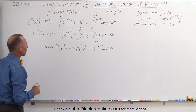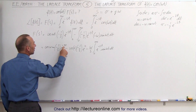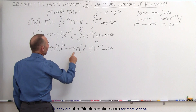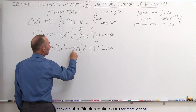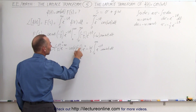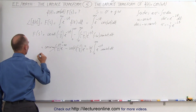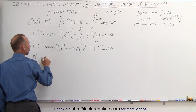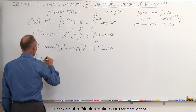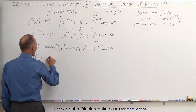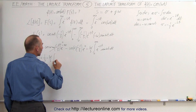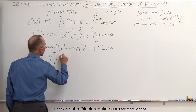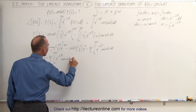Now, e^(−∞) becomes 0, e^0 is 1, cos(0) is 1, and minus times minus is plus, so we get 1·(1/s). The minus times the minus gives a plus, so F(s) equals 1/s minus (ω/s) times the integral from 0 to infinity of e^(−st)·sin(ωt) dt.